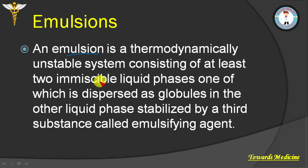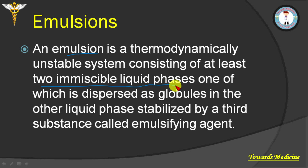Emulsion is a thermodynamically unstable system that is composed of two immiscible liquids — those liquids that can't mix to make a true solution. These liquids are mostly of different nature; one may be polar and the other may be non-polar.